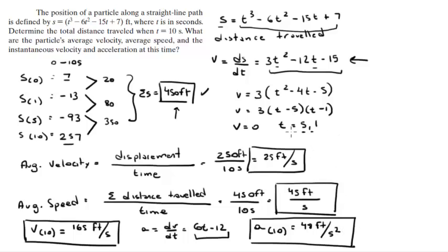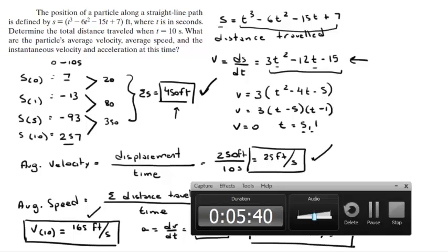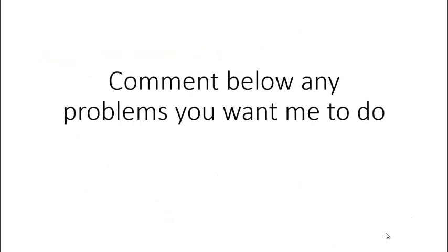To summarize: total distance traveled is 450 feet, average velocity is 25 ft/s, average speed is 45 ft/s, velocity at t = 10 is 165 ft/s, and acceleration at t = 10 is 48 ft/s². Please comment below if you want me to do any problems and I'll be happy to help.